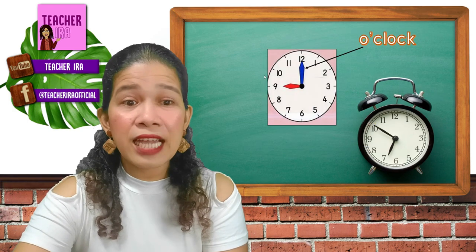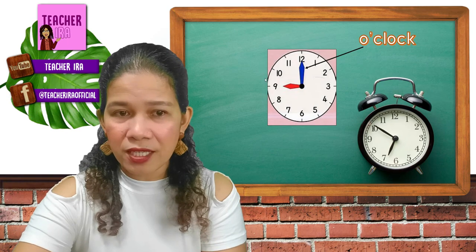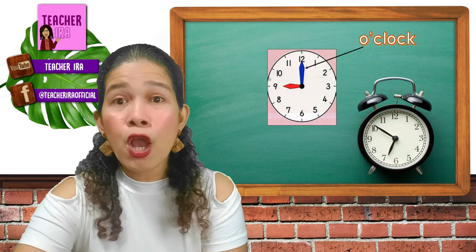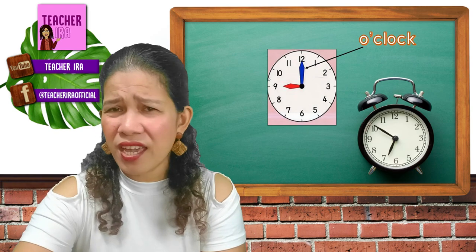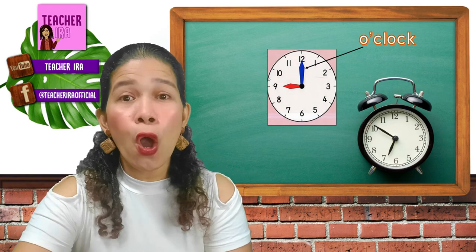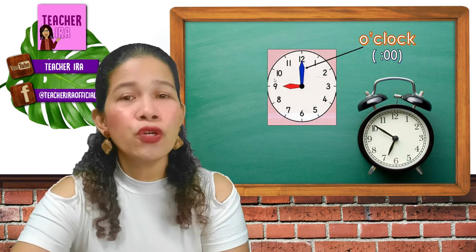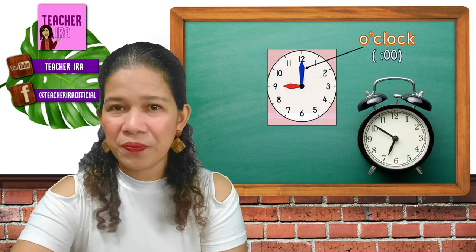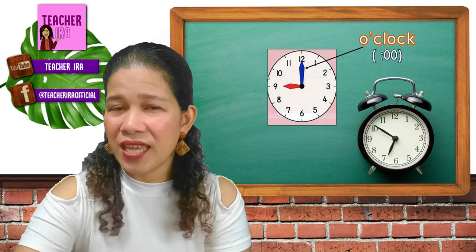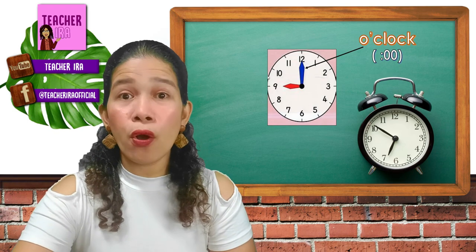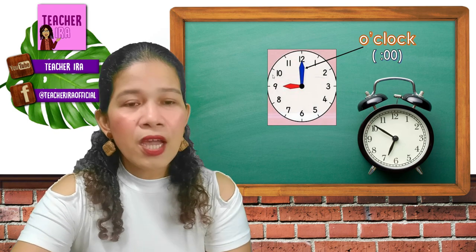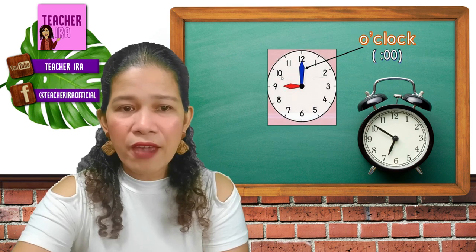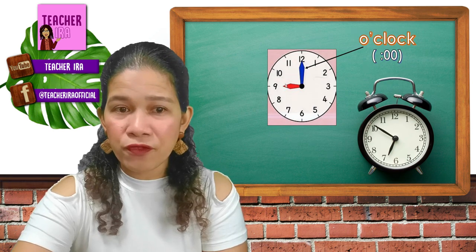Now let's go back to this clock. When this long hand is at number 12 — look at that, it's at number 12 — you will say o'clock. Can you say it? Yes, it's o'clock. You will write it this way: dot dot zero zero. Again, how do you say this? Yes, you say o'clock.